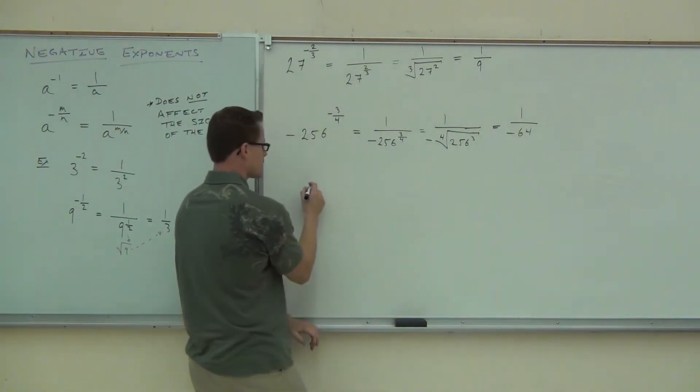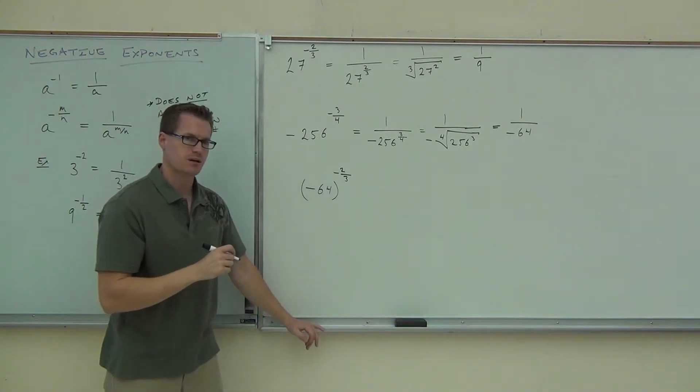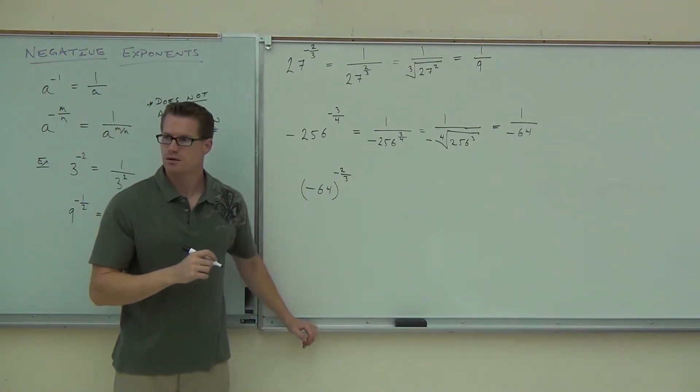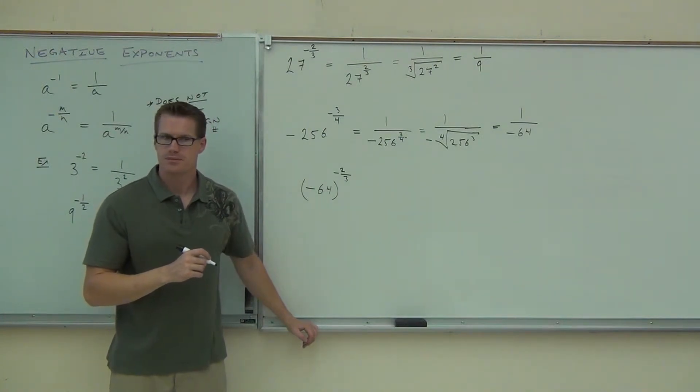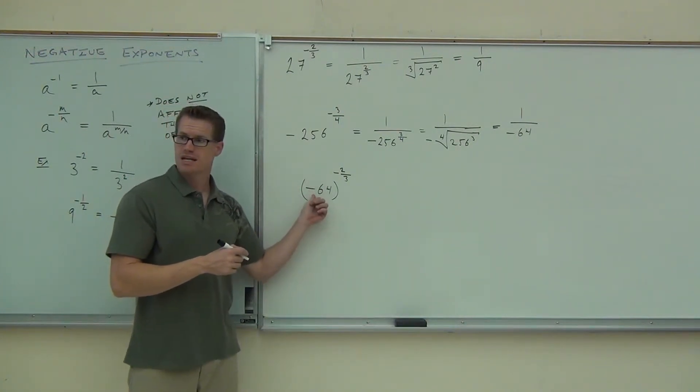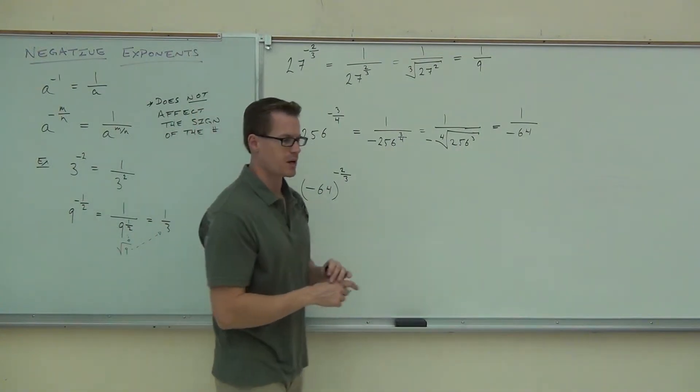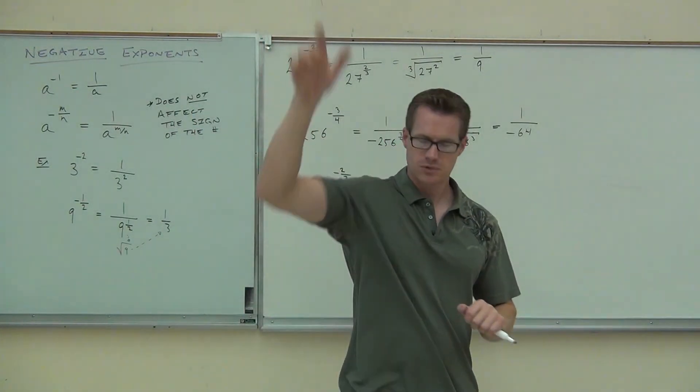If I did give you something like this, negative 64 to the negative two-thirds, would you be able to do it? Let's talk about it for a second. First thing you do is write this as 1 over what? 1 over 64. Would it still be negative? Yep. Is this negative ever going to change? No. Is this negative going to be inside the cube root that you're going to write eventually? Yes. Okay. It would be inside. How many of you feel pretty good about what we've talked about so far? Good.